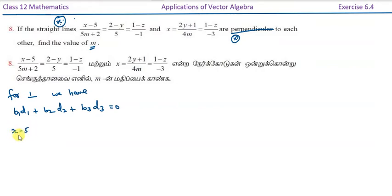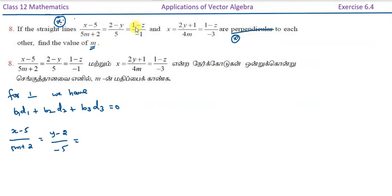Rearranging the first line: (x minus 5) divided by (5m plus 2) equals (y minus 2) divided by minus 5, equals z divided by plus 1. When you multiply by minus, you apply it to the previous term.